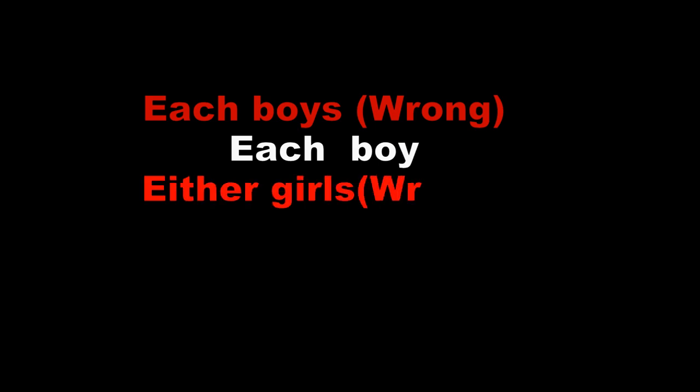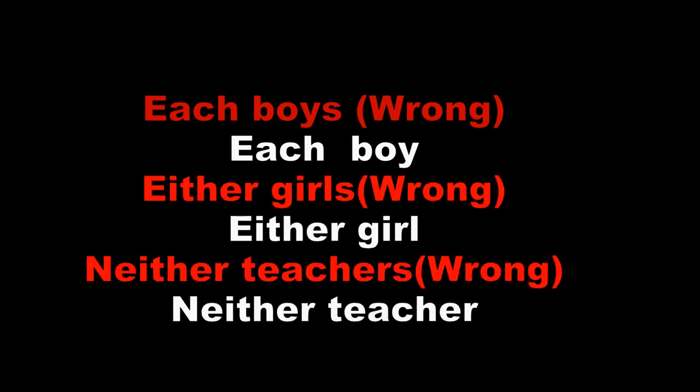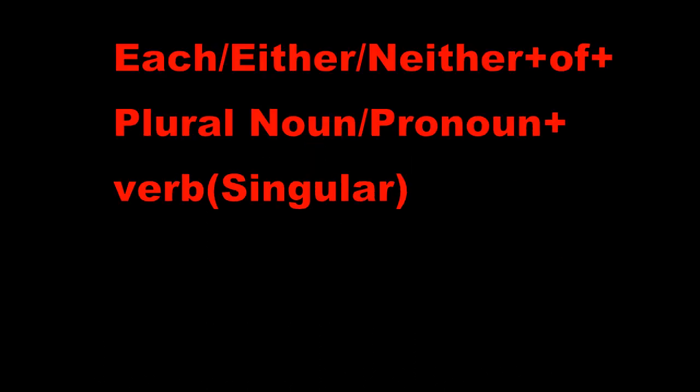The three distributive pronouns are: Each, Either, and Neither. They can also function as adjectives. For example: 'Each boys' — used as an adjective before a noun. 'Either girls' — this is the pronoun form known as Distributive Pronouns.